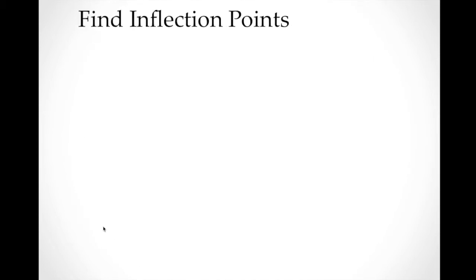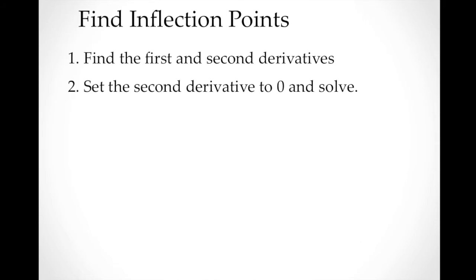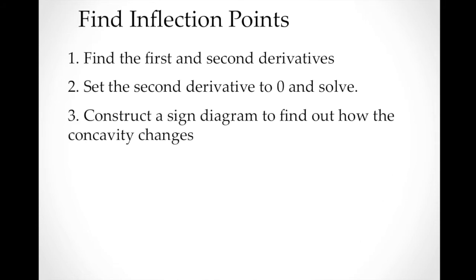Now let's take a look at the steps for finding inflection points. Step one: find the first and second derivatives. Step two: set the second derivative to zero and solve. Step three: construct a sign diagram to find out how the concavity changes. These are the complete steps in finding the inflection points.